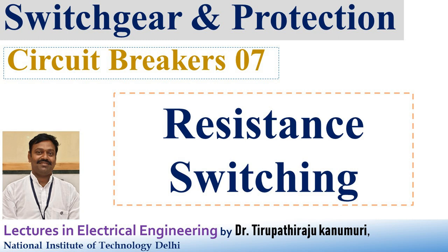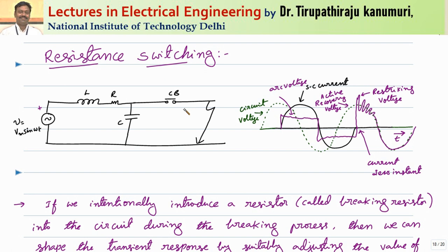Today we are going to discuss resistance switching of the circuit breaker. We have seen in the last class that whenever the circuit breaker contacts open at natural current zero, the arc will be extinguished. When the arc is extinguished, because most faults are inductive, the voltage should reach the active recovery voltage across the breaker contacts. But due to L and C circuits, high frequency oscillations are superimposed on the fundamental frequency component, which we term the restriking voltage, and this can go up to two times the rated value, causing the arc to restrike.